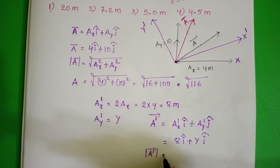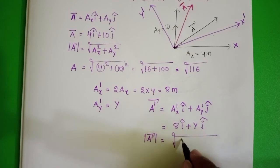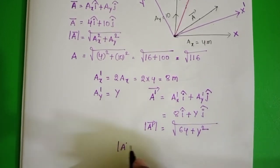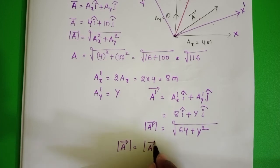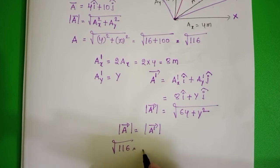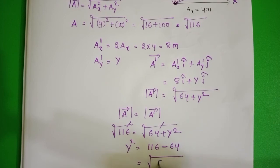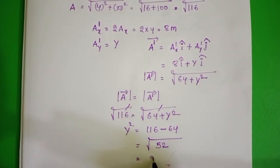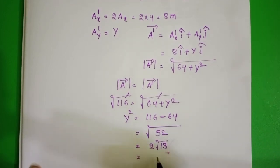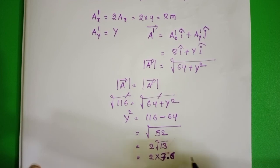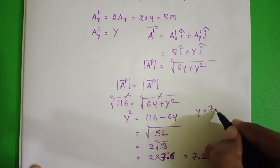The magnitude of the new vector, mod a dash bar, equals the square root of 8 squared plus y squared, that is square root of 64 plus y squared. Our condition is that the magnitude remains constant: mod a bar equals mod a dash bar. So square root of 116 equals square root of 64 plus y squared. The square roots cancel on both sides, giving y squared equals 116 minus 64 equals 52. Therefore y equals square root of 52 equals 2 root 13, approximately 2 into 3.6, giving y approximately 7.2 meters.